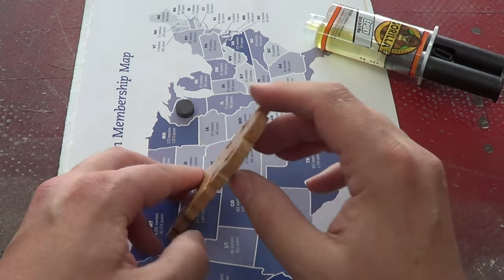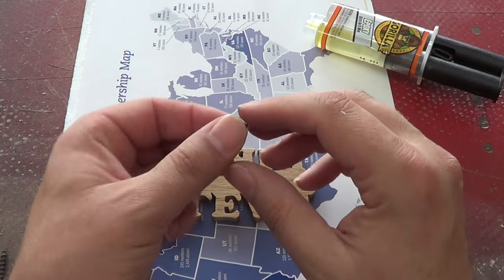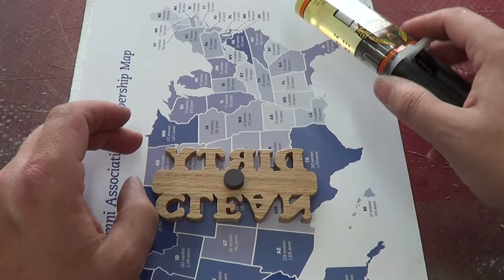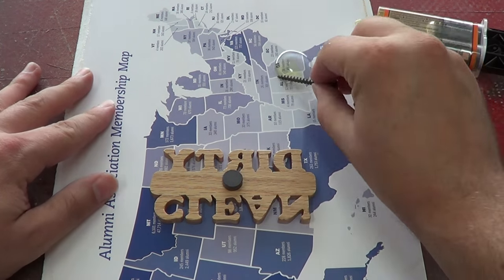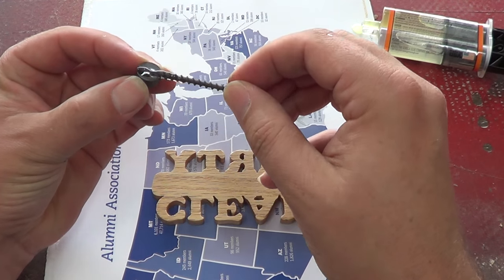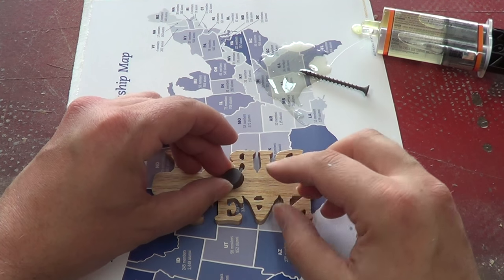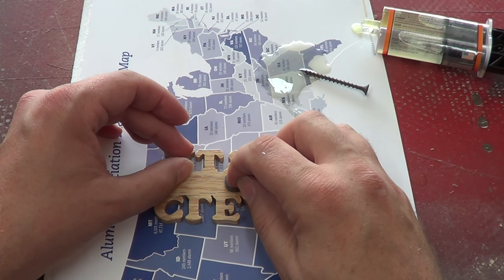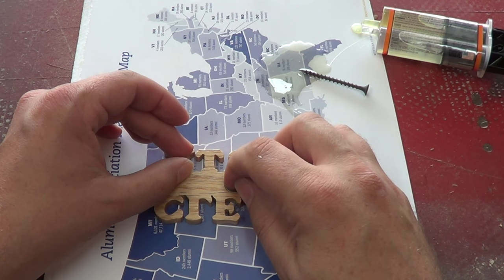And now it's time to glue on the magnet. I line up the magnet to somewhere in the middle. Squeeze out a little bit of epoxy. And just put a little dab on the magnet. You only need a little bit of glue, it actually goes quite a long way. I just press it into place and then I leave it alone until it completely dries.